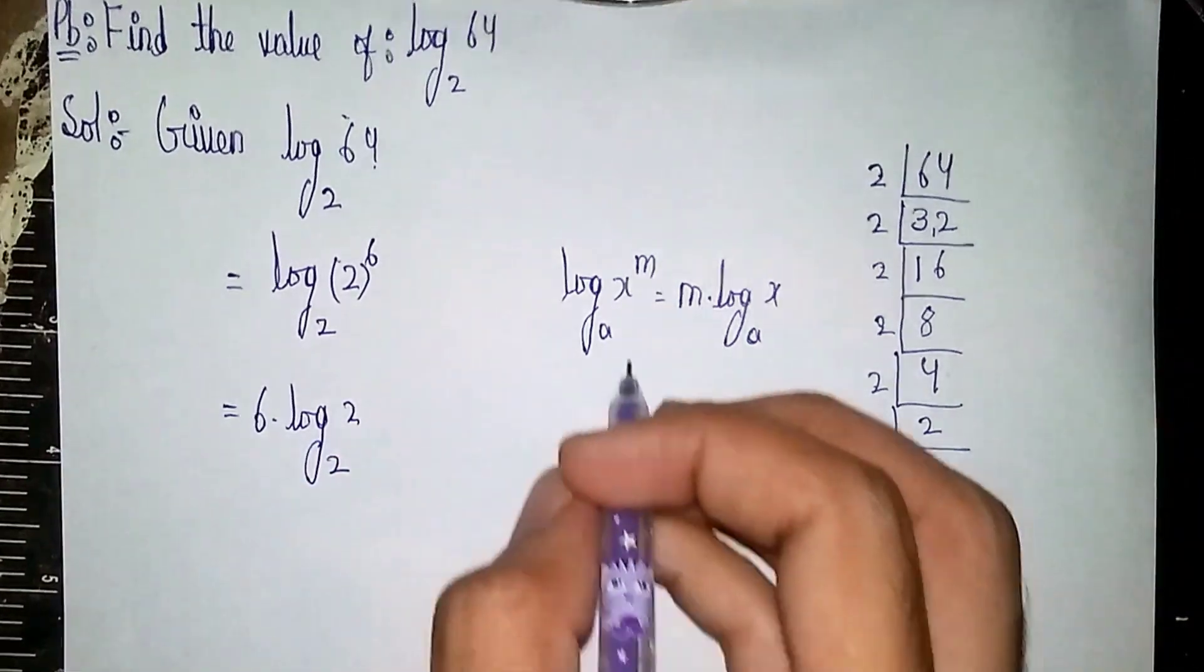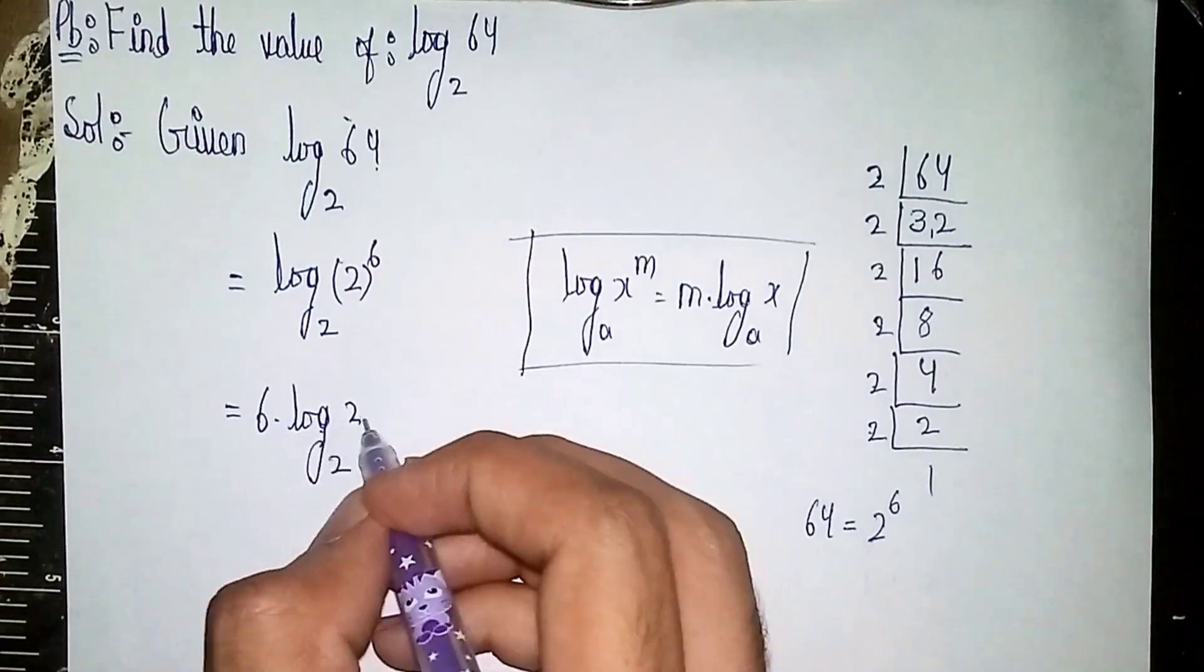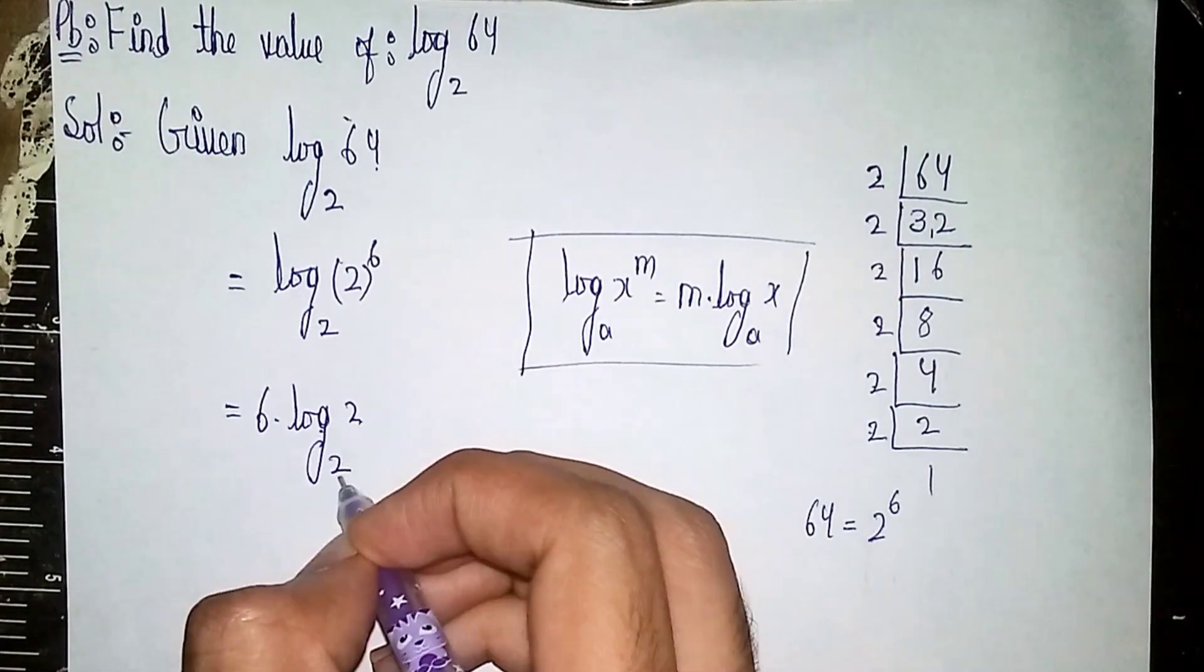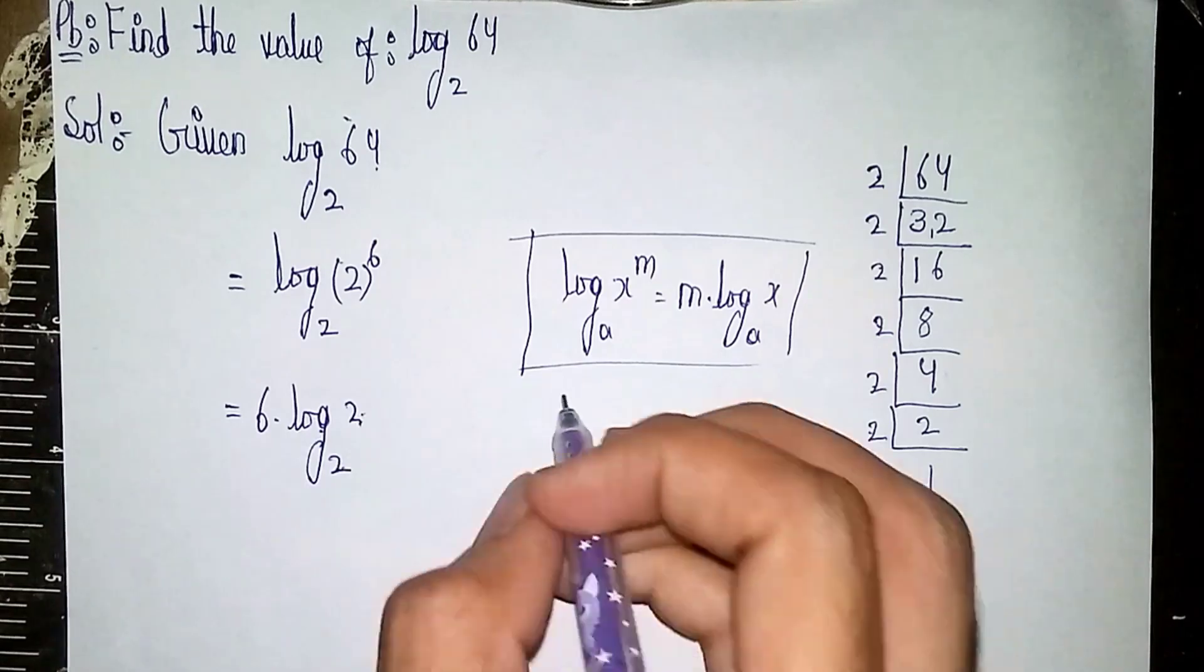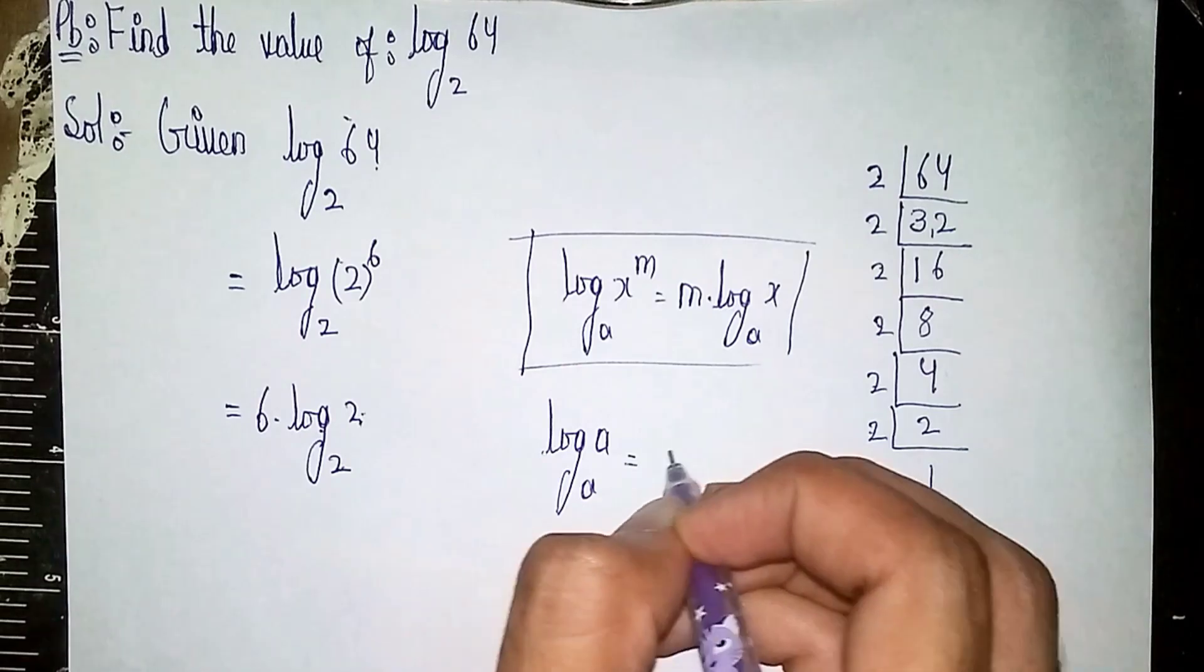Now, next formula here: 2 and the base, both numbers are same. So under the formula, log a to the base a is equal to 1. When both numbers are same, it will become 1.